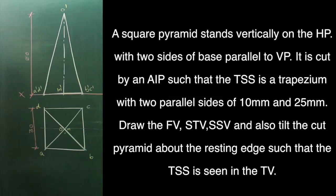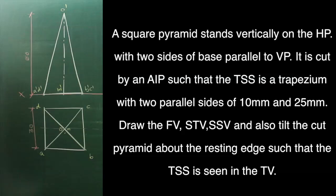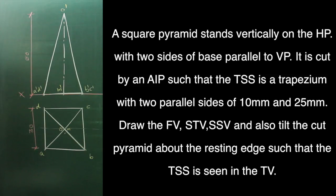A square pyramid stands vertically on the horizontal plane with two sides of the base parallel to the vertical plane. It is cut by a plane such that the cross-section is a trapezium with two parallel sides of 10mm and 25mm. We need to draw the front view, sectional top view, sectional side view, and also tilt the cut pyramid about the resting edge such that the cross-section is seen in top view.